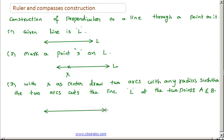Now this is the line L and this is our marker point X. Now with X as center, take any radius, draw two arcs which cuts the line L at the two points. These are two arcs which cuts the line L at points A and B.